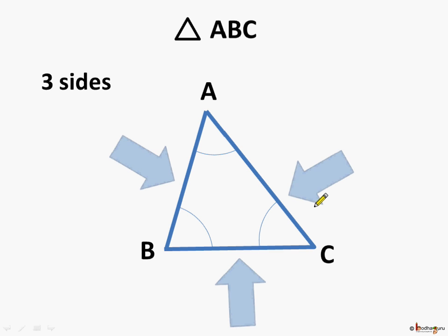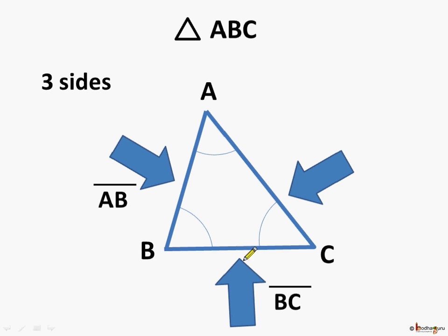It has three sides, and we can say this is the line segment AB, this is the line segment BC, and this is the line segment CA. So triangle ABC is made by line segment AB, BC, and CA.